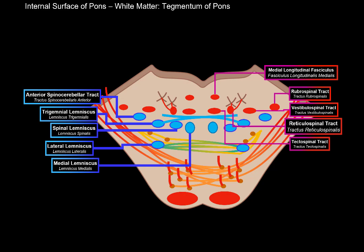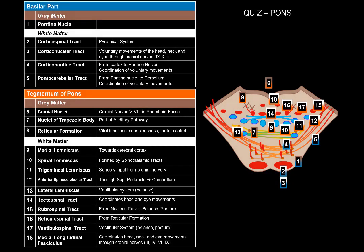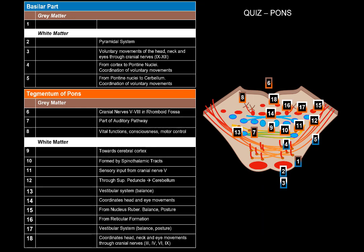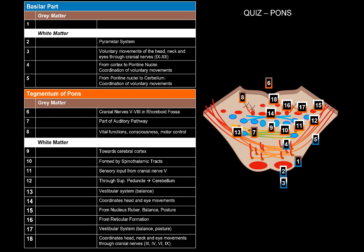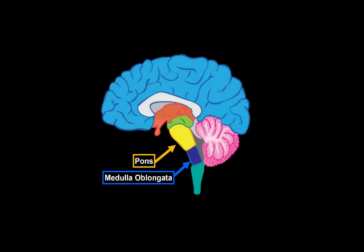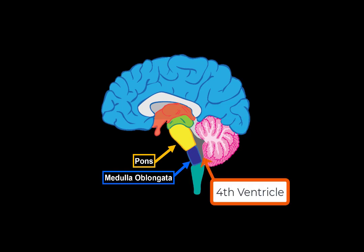That covers all the internal surfaces of pons. A table summarizes the nuclei and tracts found in the basilar part and tegmentum of pons. Now for the quiz: can you name number 1, number 4, where number 14 goes, and where number 12 goes? If you can do that, you've fully grasped the anatomy of pons. If you found this video helpful, please like, share, and comment. The next video will be about the 4th ventricle and the rhomboid fossa.